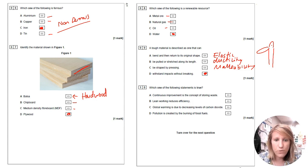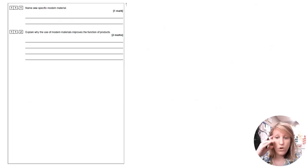Which one of the following statements is true? Continuous improvement is the concept of storing waste. No, it's not. Lean working reduces efficiency. That's wrong. It increases efficiency. Global warming is due to decreasing levels of carbon dioxide. No. And pollution is created by the burning of fossil fuels. Such an easy question. It's almost laughable. But just make sure that you read the question carefully.